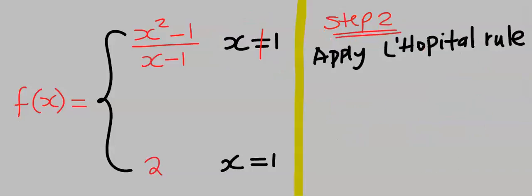Step number 2: apply L'Hôpital's rule. L'Hôpital's rule states that you should use any relevant mathematical strategy or application to remove the point of discontinuity from a function. And when you do this, you are going to get a hole, which we are going to see shortly using a graph.